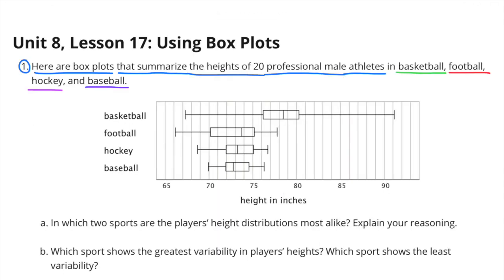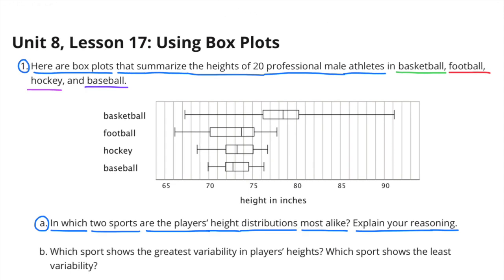Here are box plots that summarize the heights of 20 professional male athletes in basketball, football, hockey, and baseball. Part A: Which two sports are the players' height distributions most alike? Explain your reasoning.